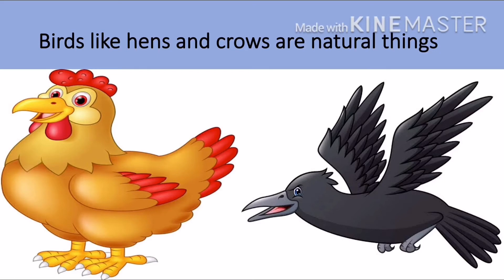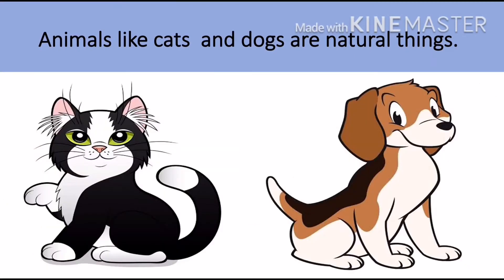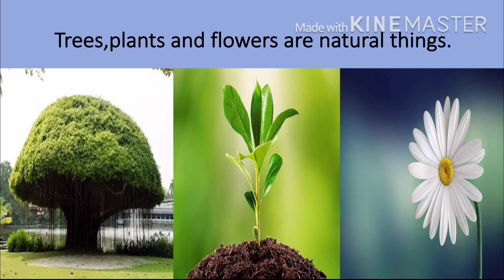Birds like hens and crows are also natural things. Animals like cats and dogs are also natural things. The trees, plants and flowers that we see all around us are also natural things which have been given to us by mother earth or mother nature.